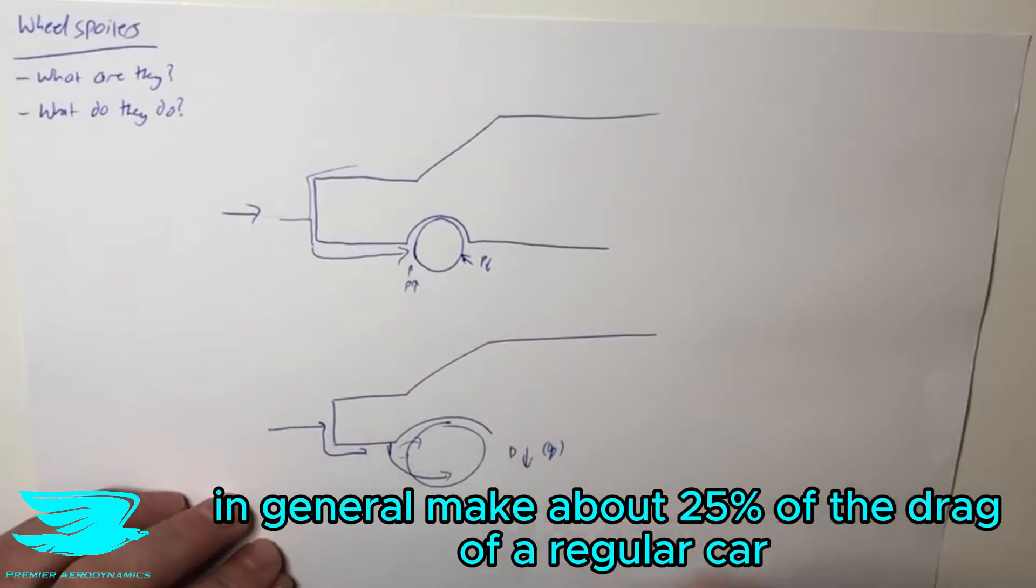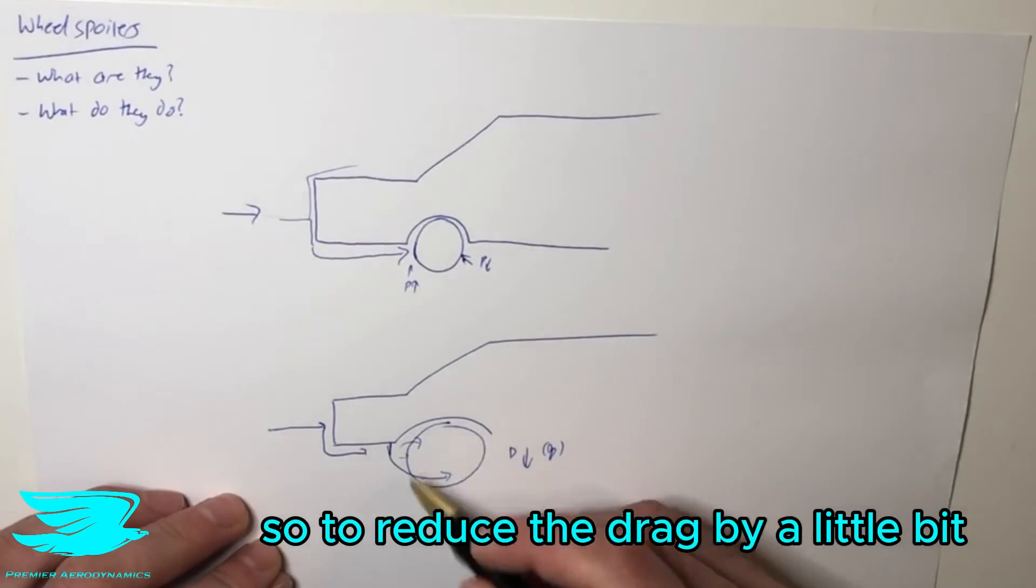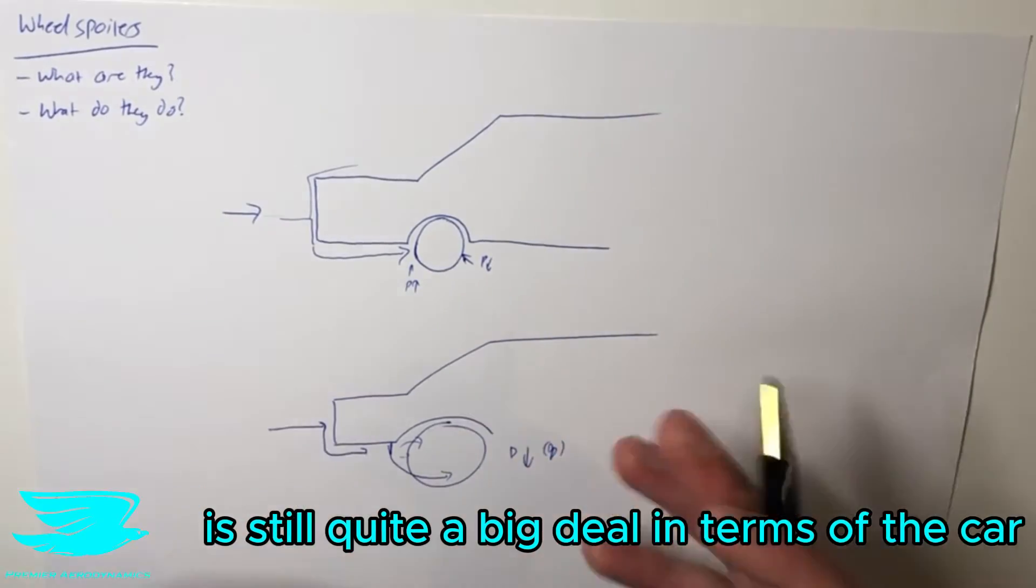The wheels generally make up about 25% of the drag of a regular car. So reducing the drag by even a little bit is still quite a big deal.